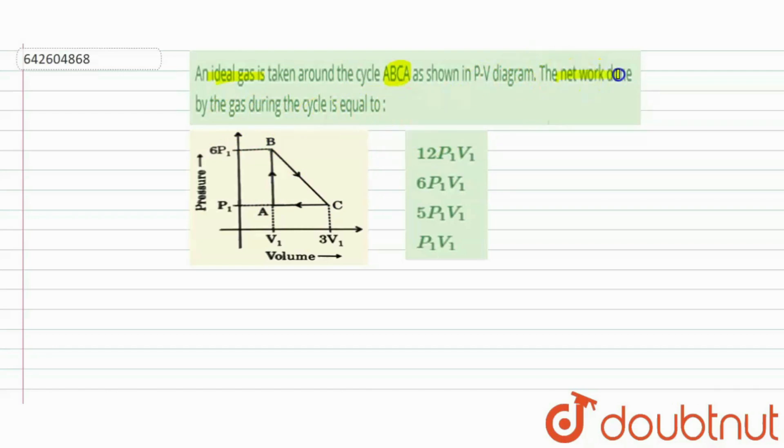Now we have to find out the net work done. And we know that for the ideal gas, our net work done is given by the area under the curve.